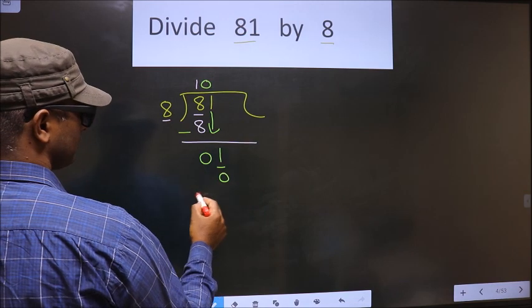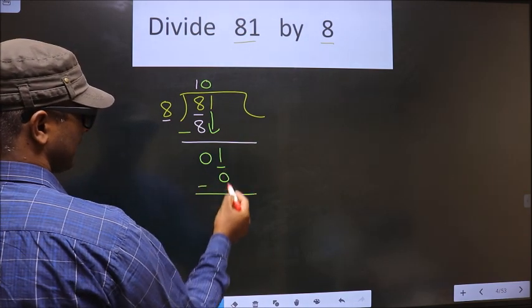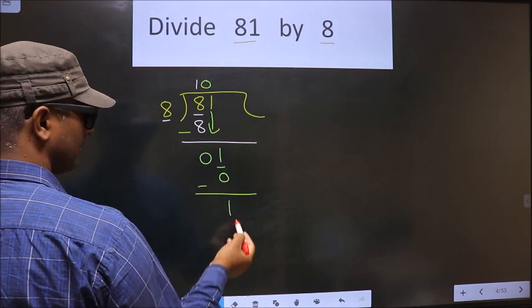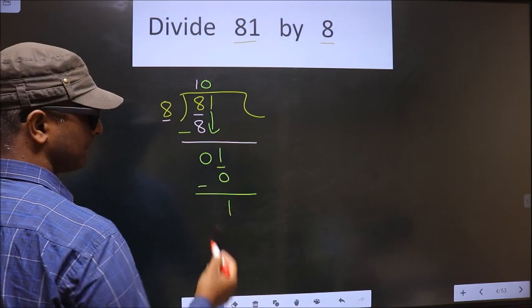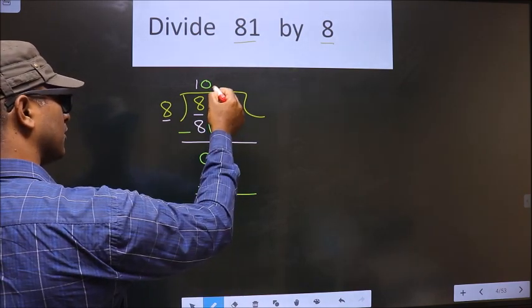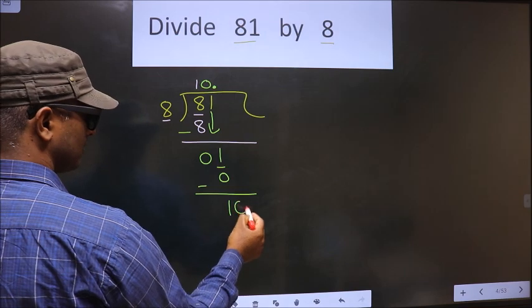So, 8 into 0 is 0. Now, you subtract. You get 1. Now, we did not bring any number down. So, now you can put decimal and 0 here.